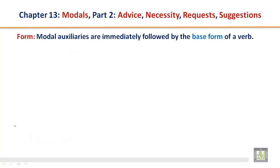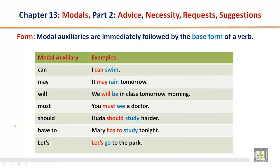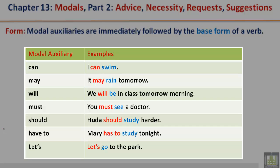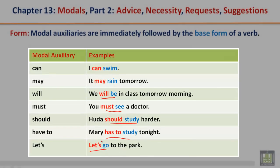Form: Modal auxiliaries are immediately followed by the base form of a verb. Modal auxiliary can: I can swim. May: It may rain tomorrow. Will: We will be in class tomorrow morning. Must: You must see a doctor. Should: Huda should study harder. Have to: Mary has to study tonight. Let's: Let's go to the park. Notice that the base form of the verb always goes after the modal auxiliary.